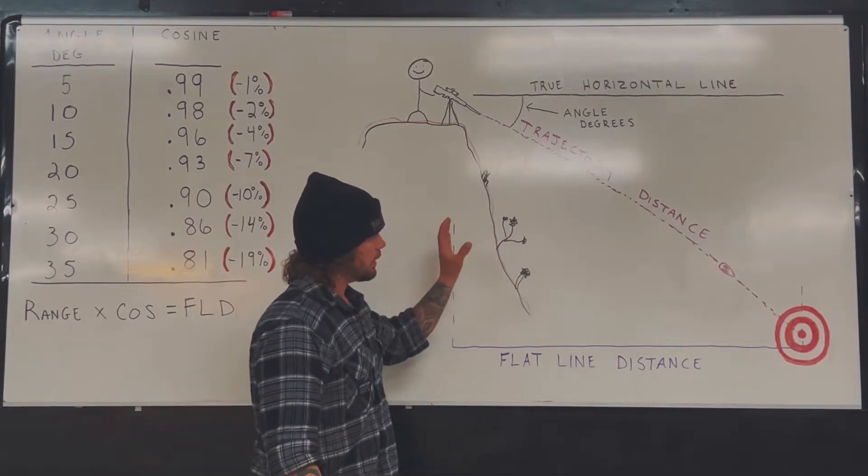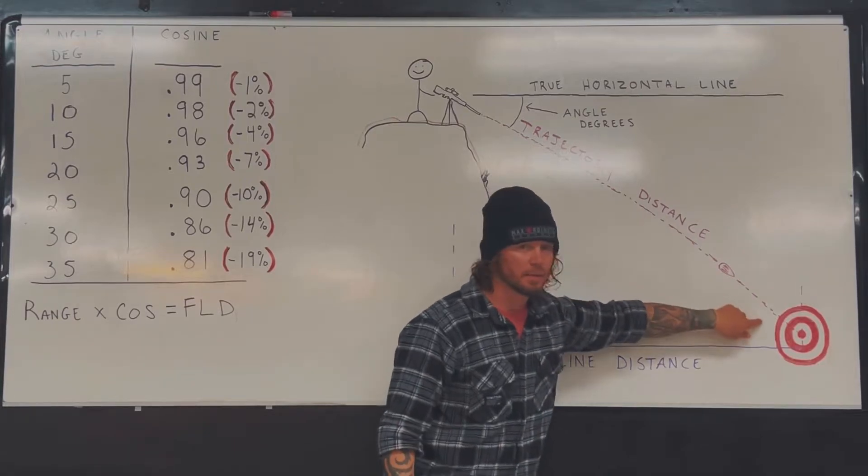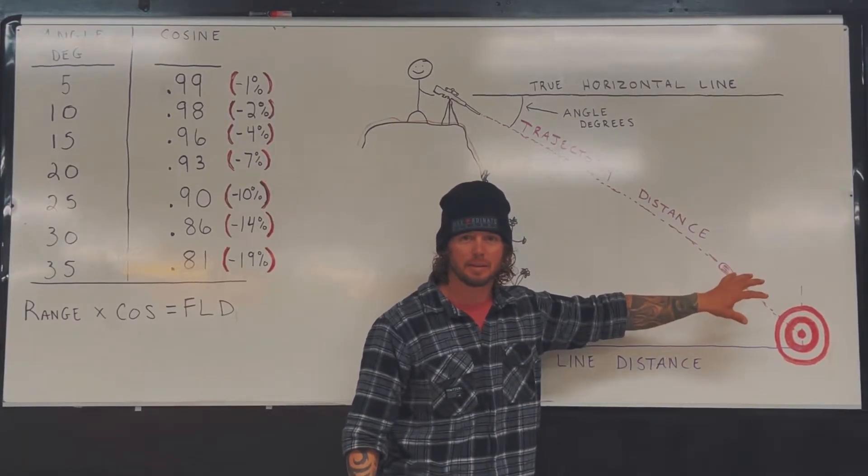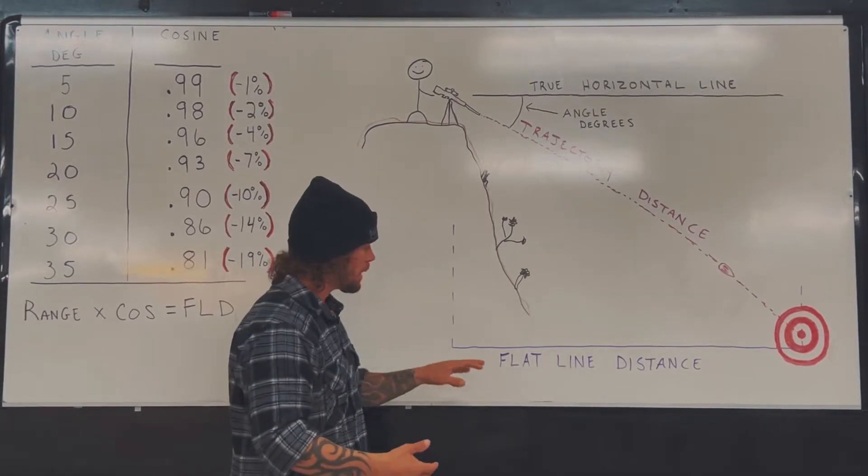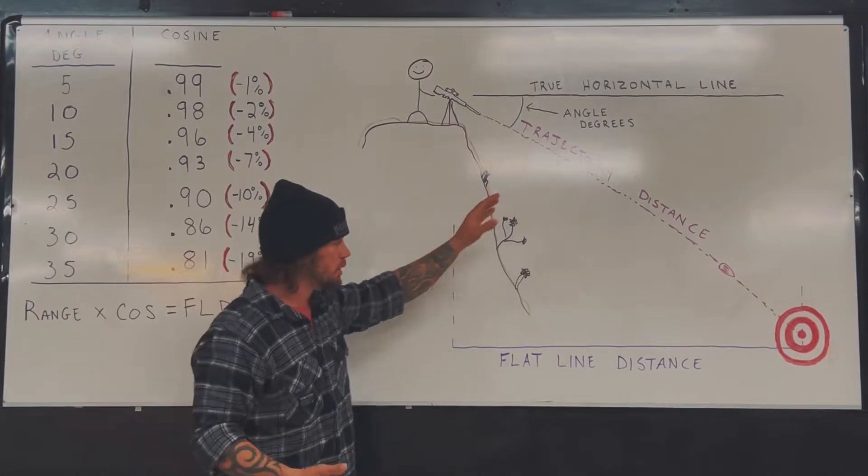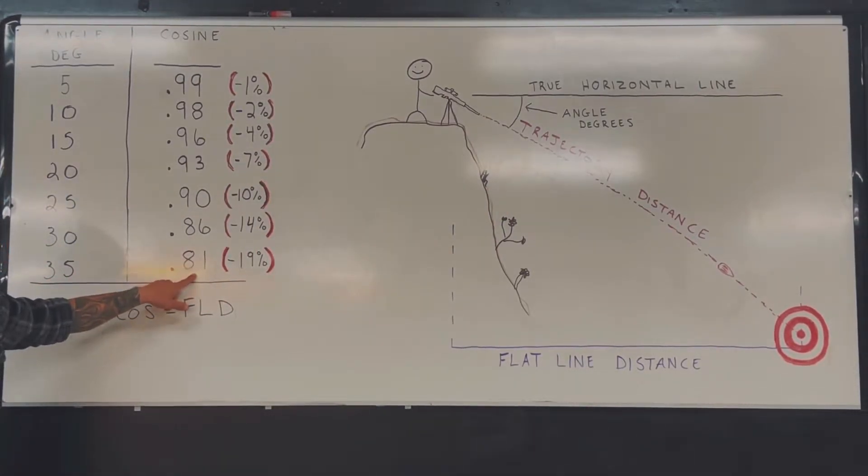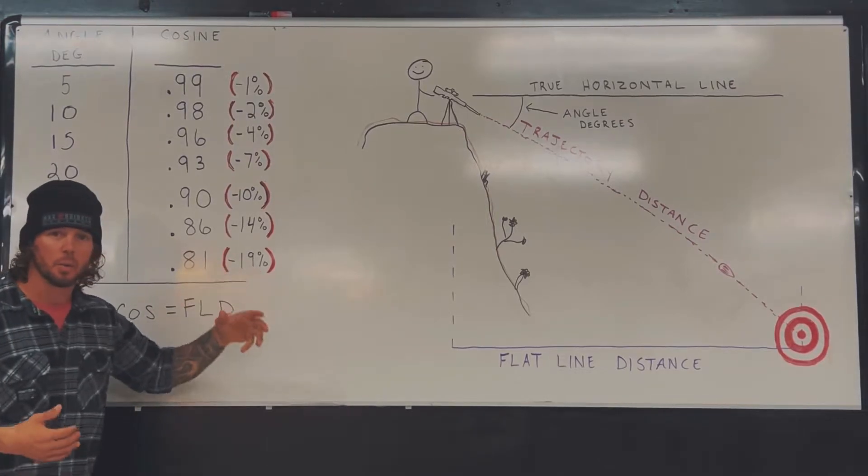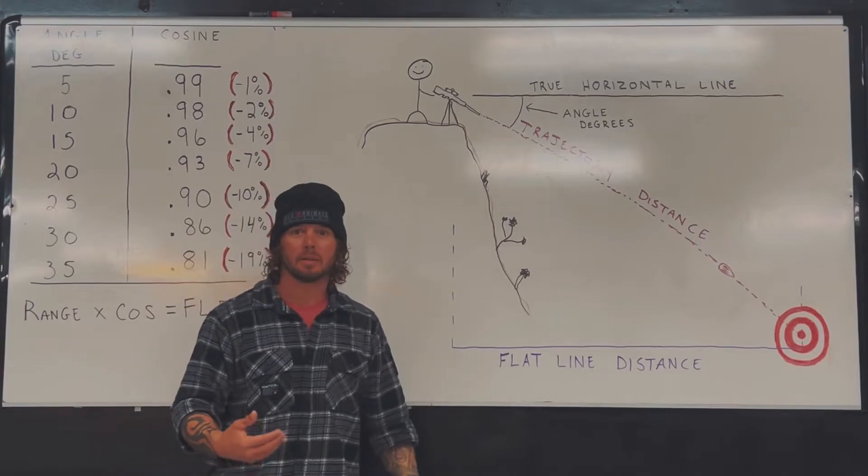Now again, just to reiterate, our projectile is actually traveling whatever that distance is. Let's call it 400 yards. We have a 35 degree angle, so we come over here - 35 degrees is 0.81. I'm going to round up to 20%. Well, I know that 10% of 400 is 40, so 20% is going to be 80.